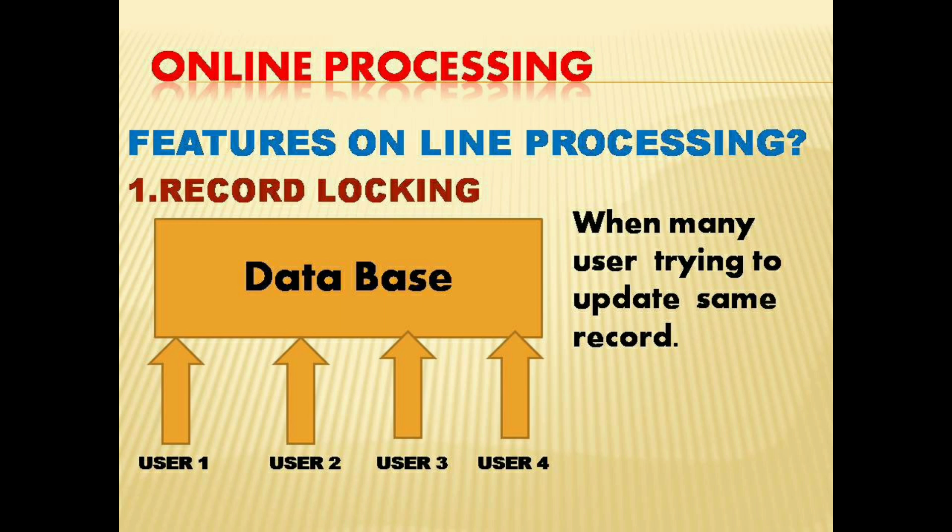The first feature is record locking. When there is a database being accessed by many users — user 1, user 2, user 3, user 4 — all trying to book tickets, it is possible that two people try to update the same record at the same time. To avoid this, record locking is provided. The record under use is locked so that no one else can update it simultaneously.